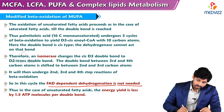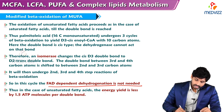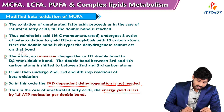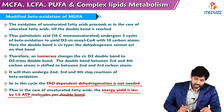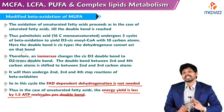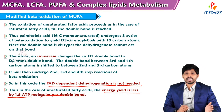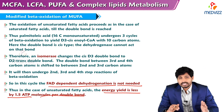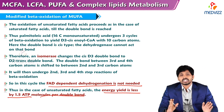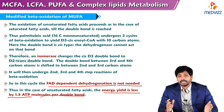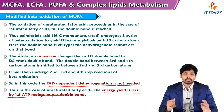In this cycle, FAD-dependent dehydrogenation is not needed. So in the case of unsaturated fatty acids, energy production is less by 1.5 ATP molecules per double bond, whereas in the case of saturated fatty acids there is an extra generation of 1.5 ATP molecules since there is no double bond.